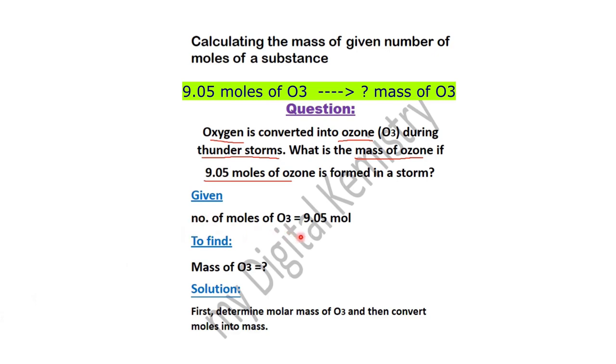Given ہے number of moles of ozone جو کہ 9.05 moles of ozone ہمیں given ہے۔ Find out ہم نے کرنا ہے mass of ozone کو۔ Mass of ozone کو find out کرنے کے لئے سب سے پہلے ہم molar mass of ozone کو find out کریں گے اور اس کے بعد اس moles کو ہم mass میں convert کر دیں گے۔